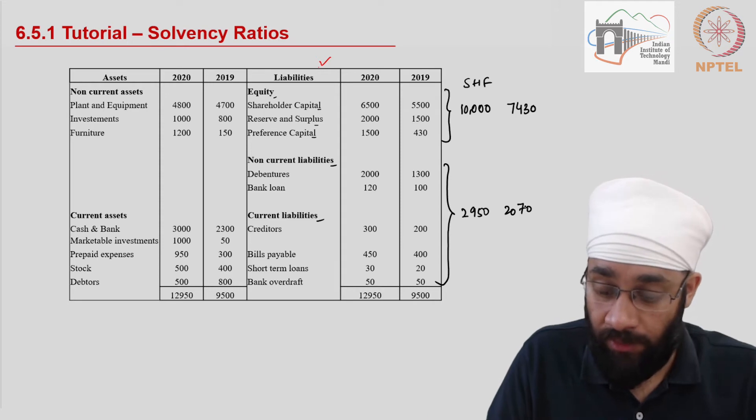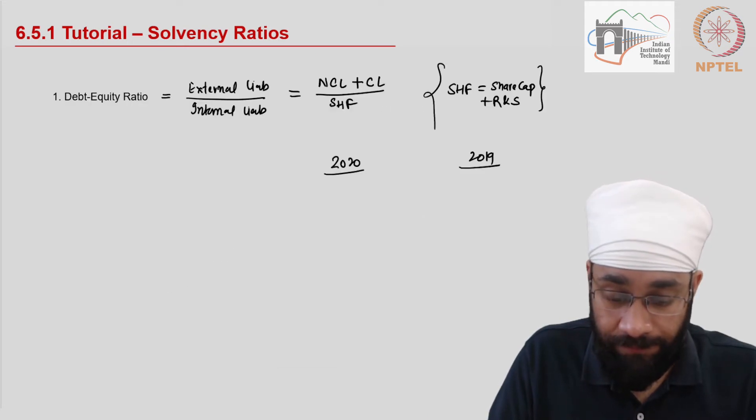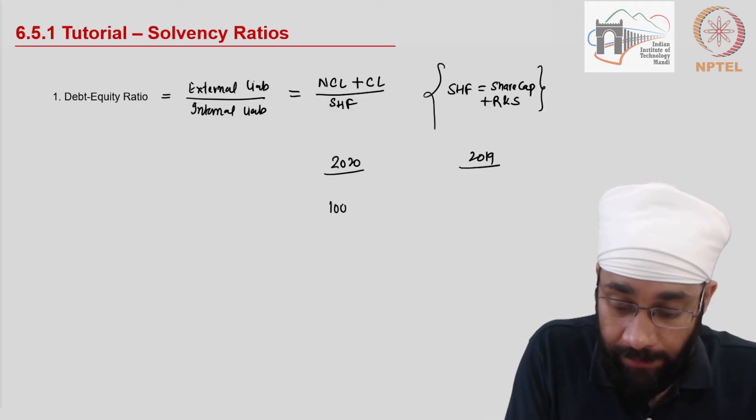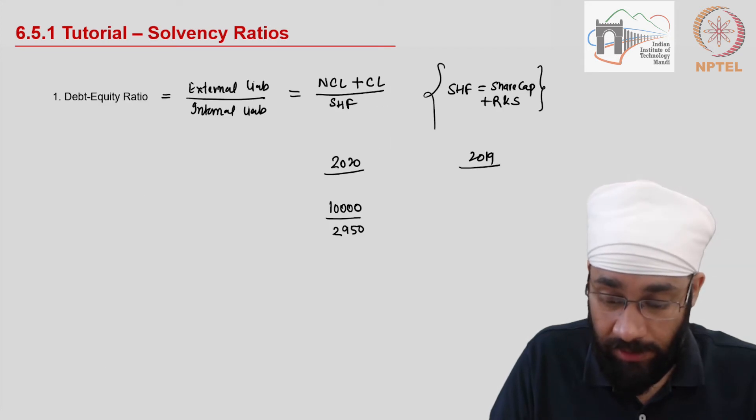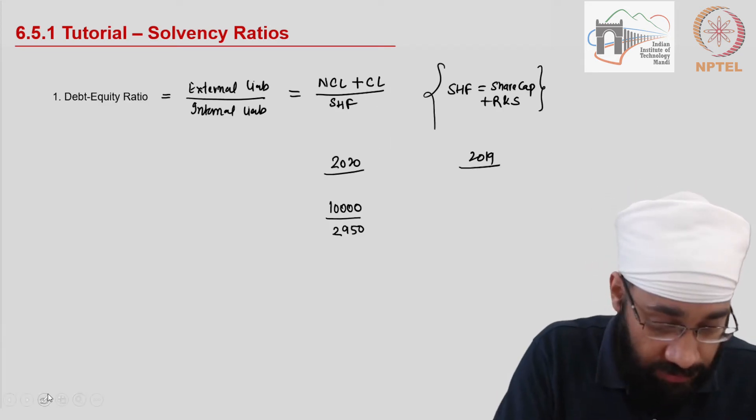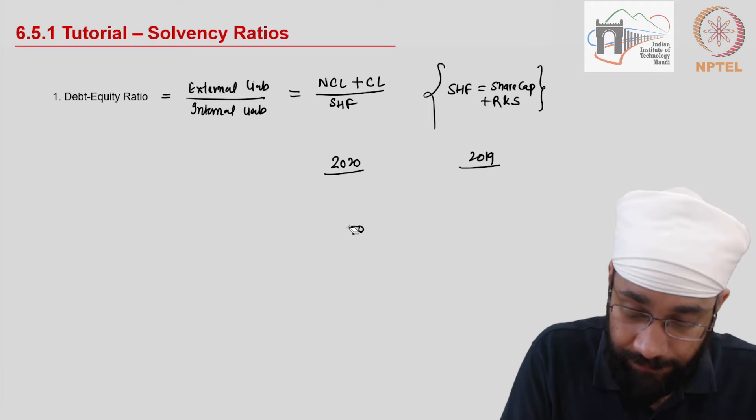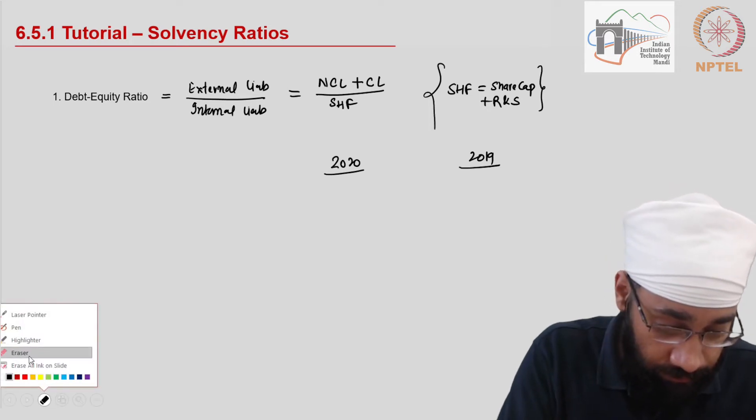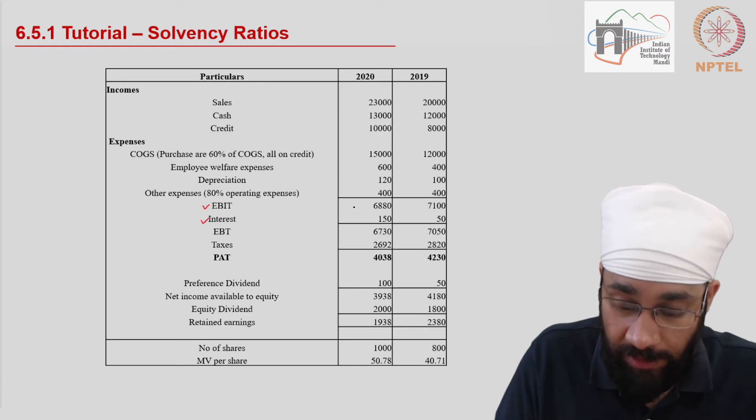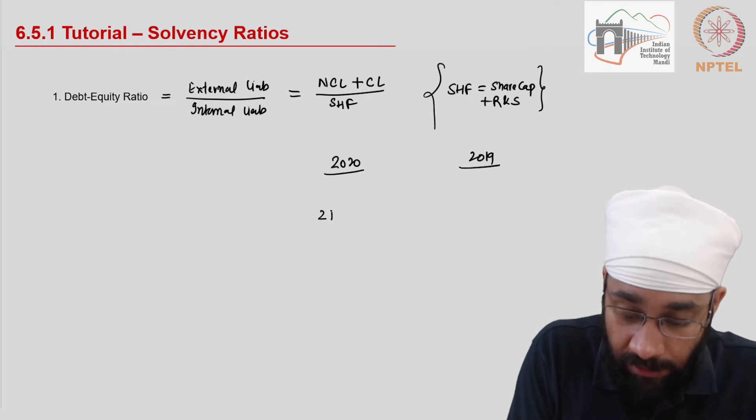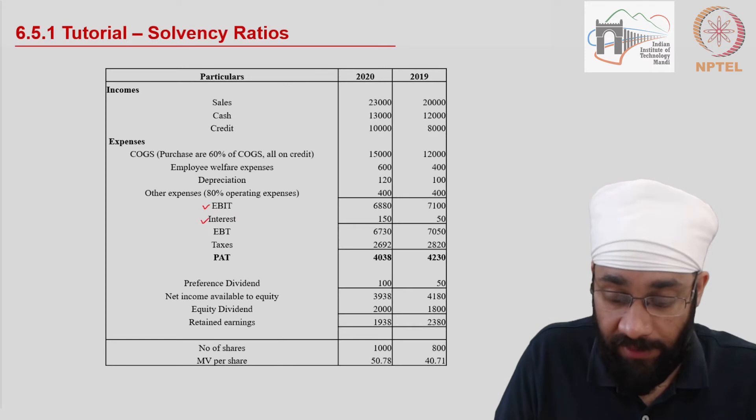So 10000 and 2950. Oh, the other way actually. So let me just erase this. So 10000 is the shareholder funds and 2950 divided by 10000, external divided by the internal.